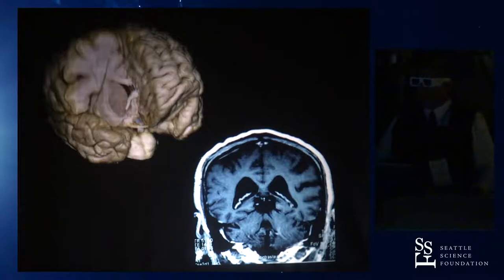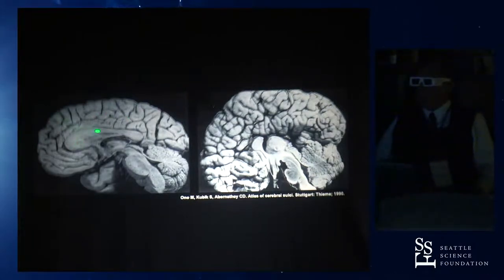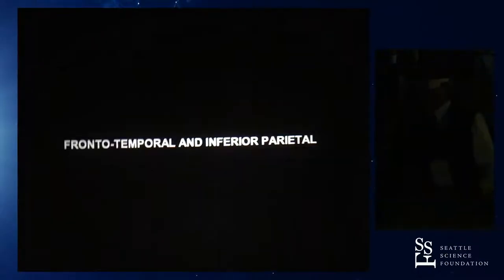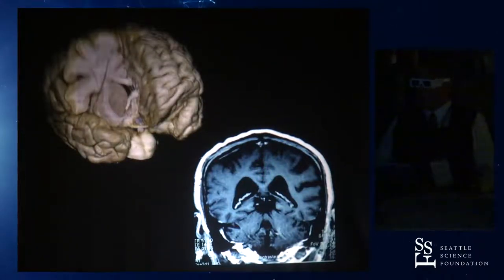This is not true, however, for the interhemispheric fissure — for the medial aspect — because the sulci of the medial aspect of the brain are developed depending on the development of the corpus callosum. If you have an agenesis of the corpus callosum, the sulci will not be organized at all. The sulci of the interhemispheric fissure are pretty much parallel to the corpus callosum.